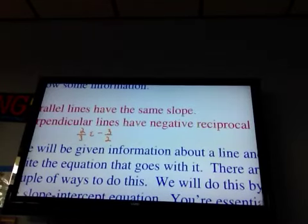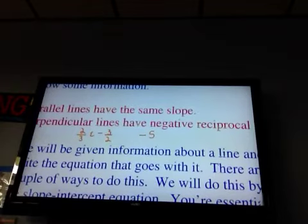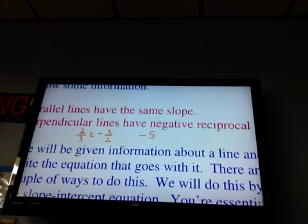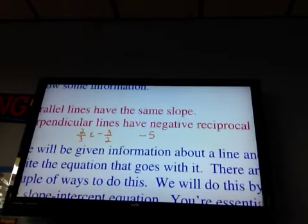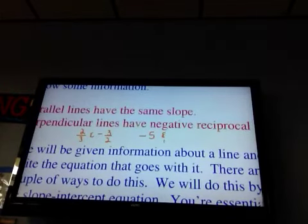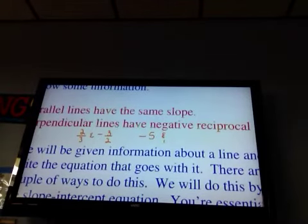Let me give you another example. If I have a line that has a slope of negative five, the line perpendicular to it would have a slope of positive one over five.